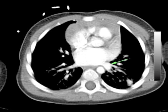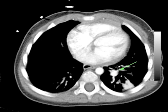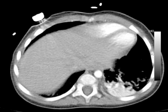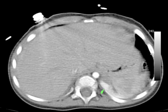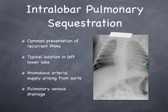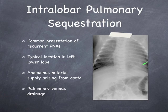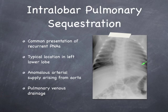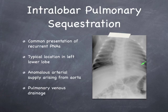On the axial series, we can also see that this segment drains into the left pulmonary vein, allowing us to make a diagnosis of intralobar pulmonary sequestration in this child who presented with recurrent pneumonias.